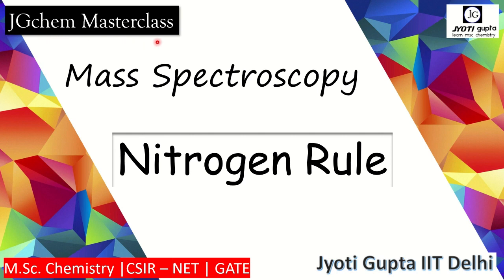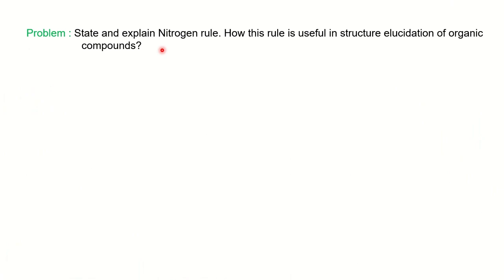Hello everyone, welcome to JGK Masterclass. Today we are going to learn about the nitrogen rule, which comes in mass spectroscopy. This is a very important rule for organic molecules which have nitrogen atoms. We will find a number of questions in MST question papers like: what is the nitrogen rule, what is the application of it, or mention its significance and explain it by suitable example. The first type of question I can explain here is: state and explain the nitrogen rule and how this rule is useful in structural elucidation of an organic compound.